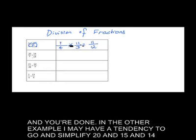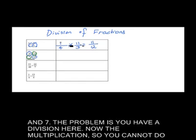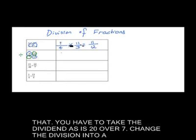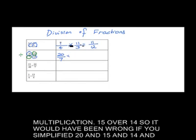In the other example, I may have a tendency to go and simplify 20 and 15, and 14 and 7. The problem is you have a division here, not a multiplication, so you cannot do that. You have to take the dividend as is, 20 over 7, change the division into a multiplication, 15 over 14.